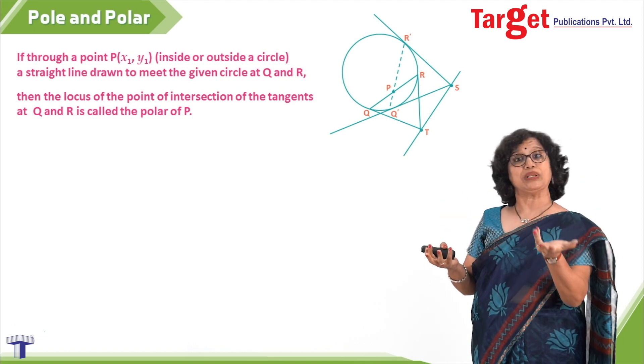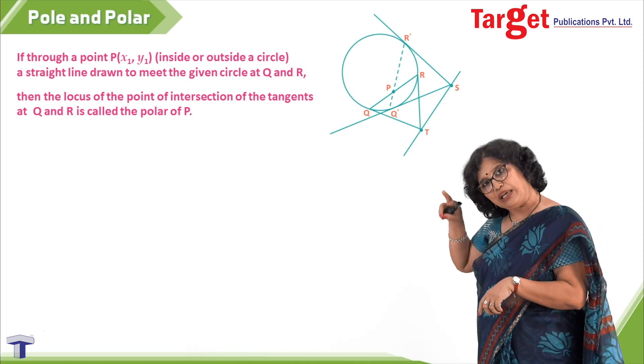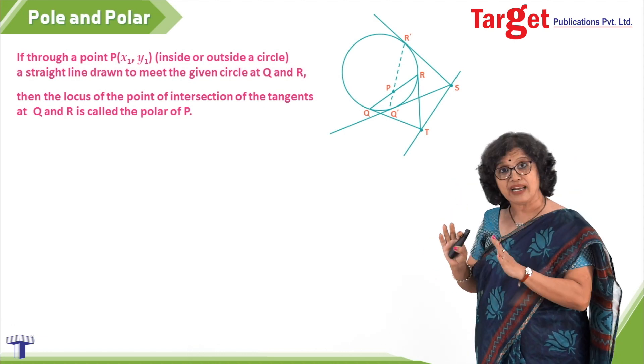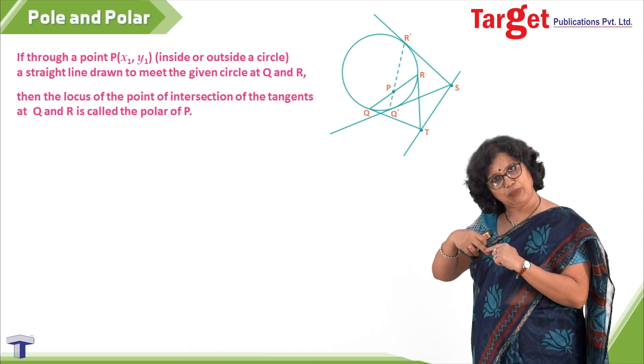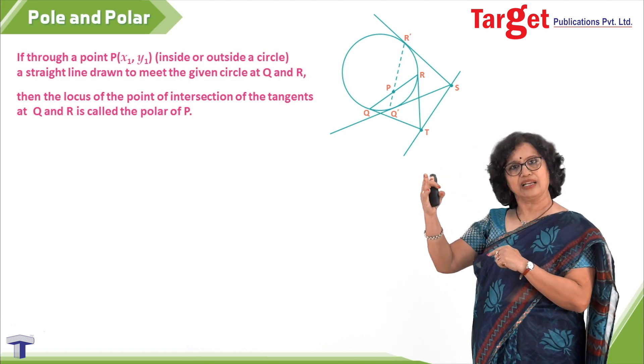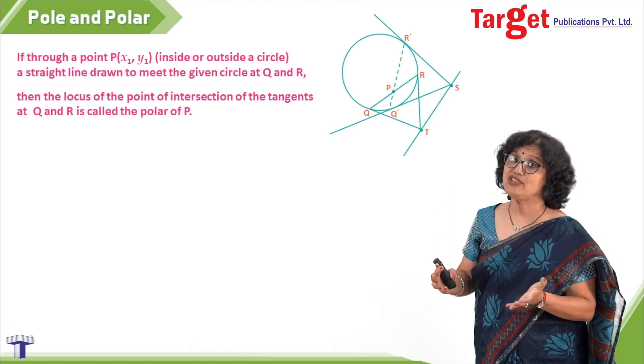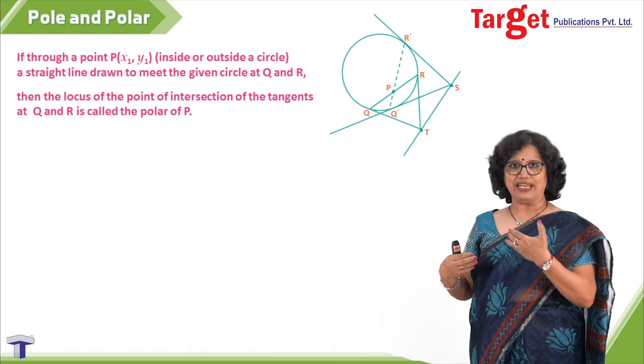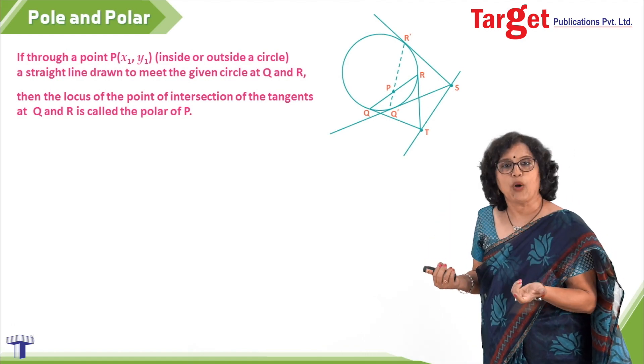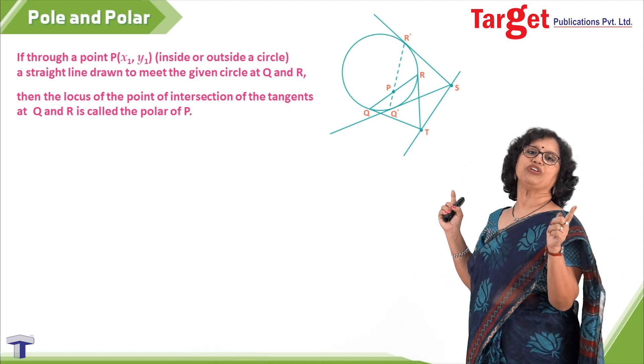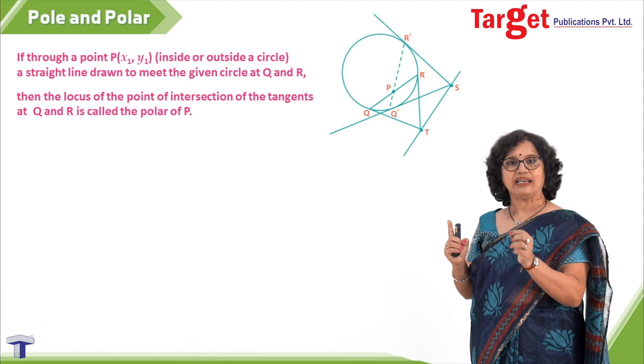The picture could have been the other way also. You try on your own, keeping point P outside, and then do a similar exercise. Through P, draw lines which will meet the circle at Q and R, draw 2-3 lines to see various positions, draw tangents at Q and R, and see the point of intersection of tangents. When you join those points, you will be getting the polar.